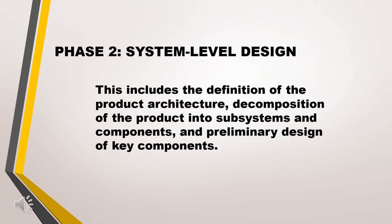Phase 2 is system-level design. This includes the definition of the product architecture, the composition of the product into subsystems and components, and preliminary design of key components. The output of this phase usually includes a geometric layout of the product, a functional specification of each subsystem, and a preliminary process flow diagram for the final assembly process.